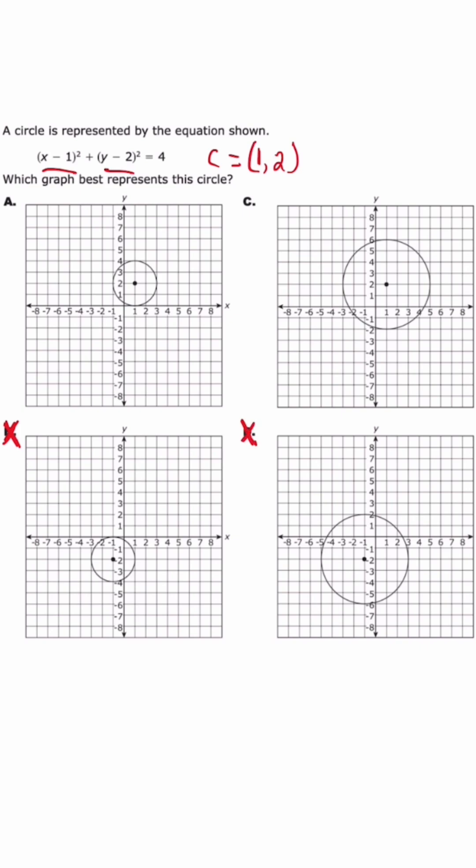Now, the next thing we need to understand is the radius. Typically, the formula is going to be X minus H squared plus Y minus K squared is equal to R squared. So R squared, if it's four, that means that the radius is actually two.